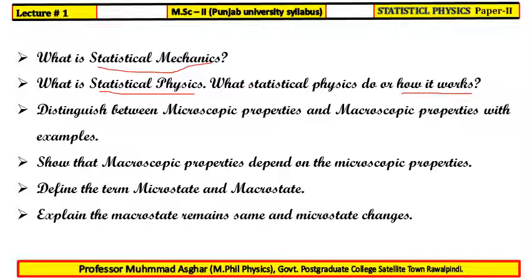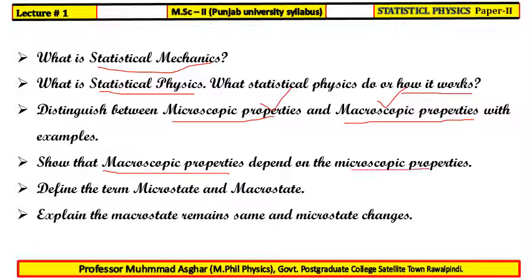There are two types of properties: microscopic properties and macroscopic properties. We will distinguish between these two properties with suitable examples. Knowing these properties, we will show that macroscopic properties are dependent upon the microscopic properties. And due to these two properties, we will define two states — one is the microstate and other is the macrostate.